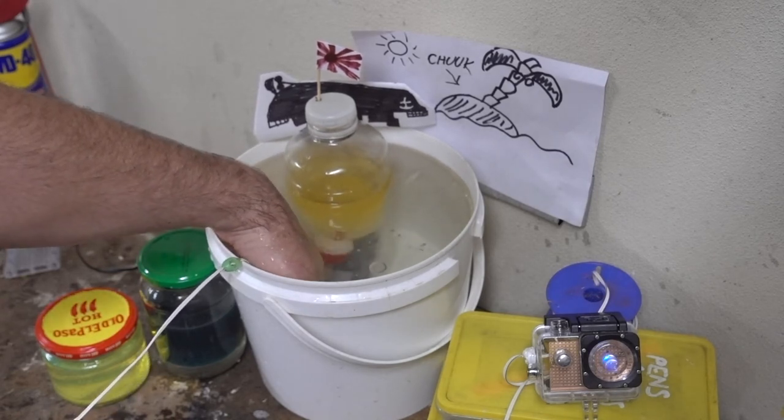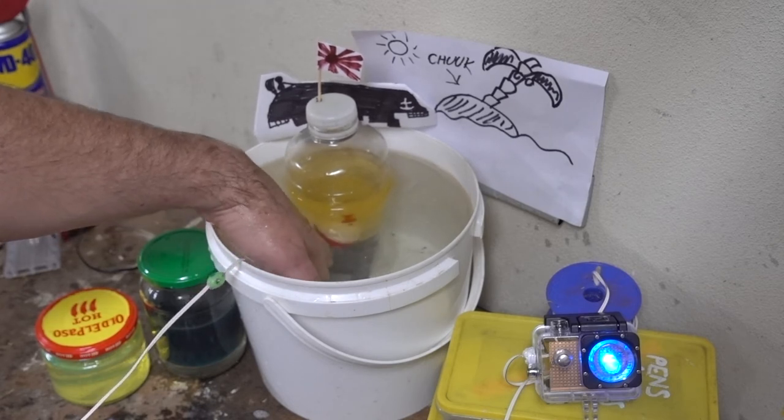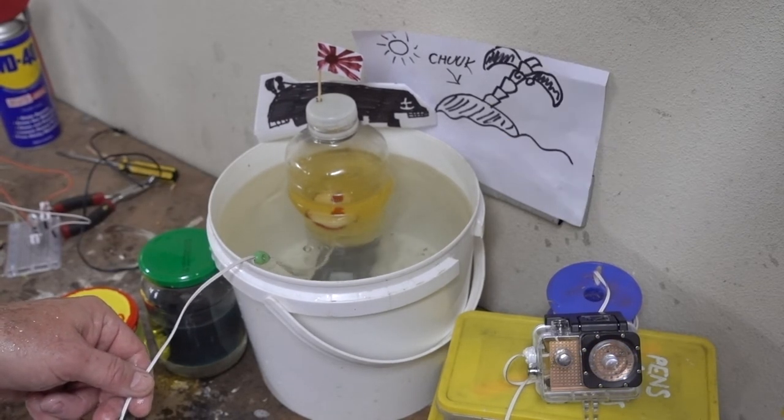So if we pull the buoy back down again out of the oil layer, goes back into the water, electrical circuit, light goes back on again. Release the float again, let it head back up into the oil, hits the oil again, light goes off. We can confirm our measurement.